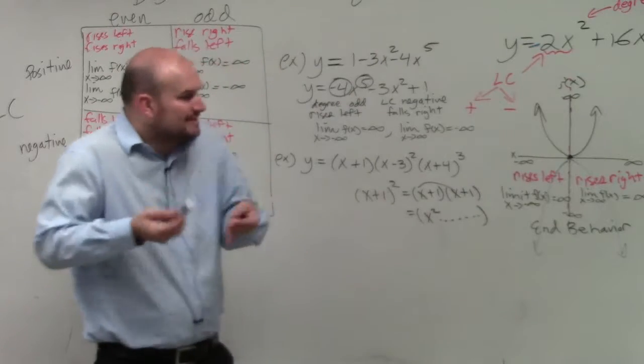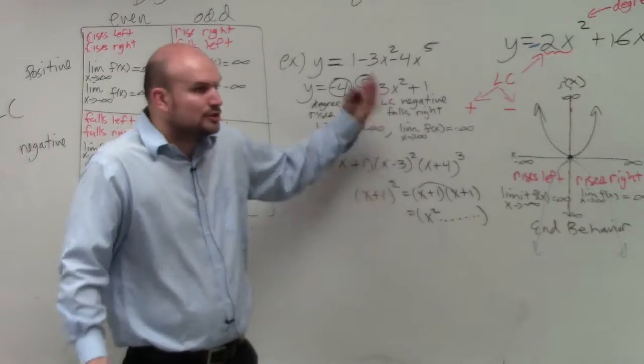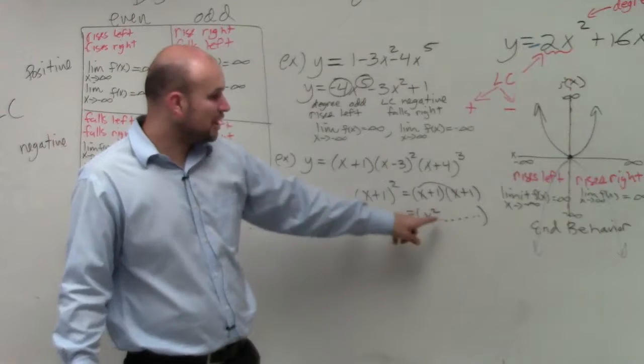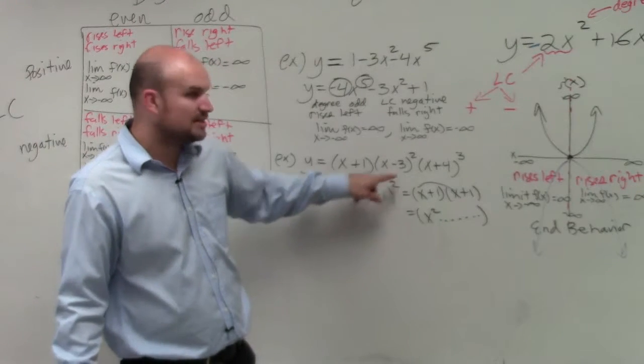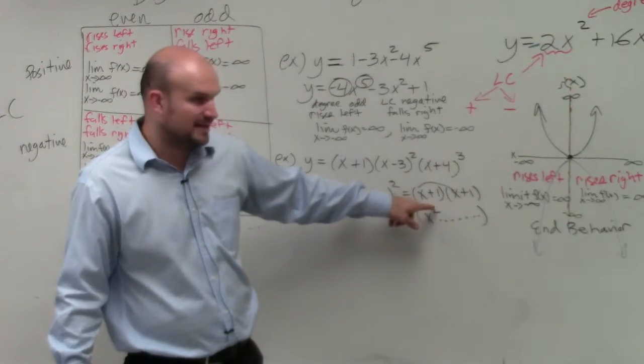So remember, when we're determining end behavior, we only care about the largest degree. We don't care about everything else. So the largest degree in a binomial squared would be that x squared.